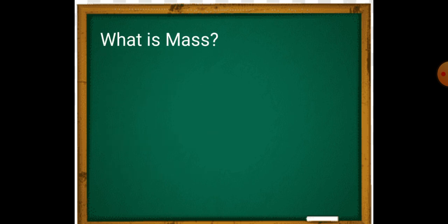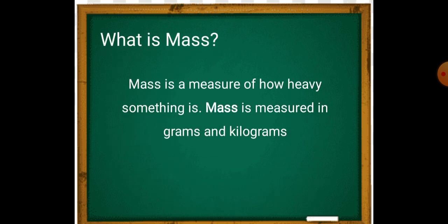What is mass? Mass is a measure of how heavy something is. Mass is measured in grams and kilograms. Heavy objects are measured in kilograms and lighter objects are measured in grams.